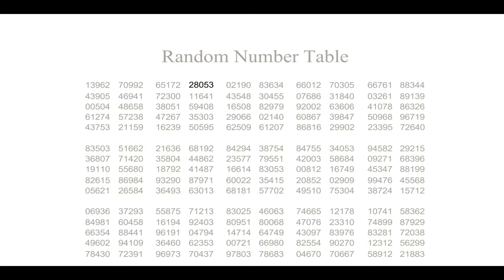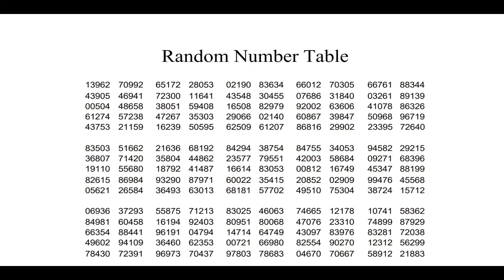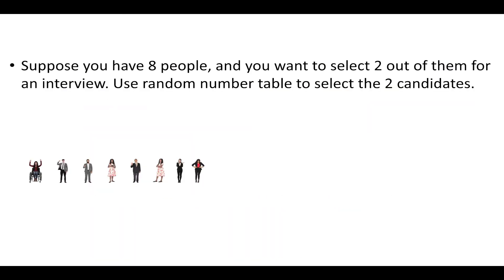Now let us see how to use the random number table. Suppose you have 8 people and you want to select 2 out of them for an interview. Use the random number table to select the 2 candidates. In step 1, we will assign a number to each person — number 1 to the first person and so on up to 8. We can also assign numbers from 0 to 7, but here we will use 1 to 8.